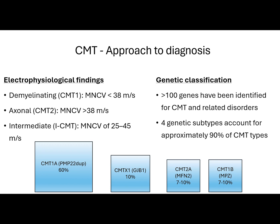The genetic classification is far more complex, as more than 100 genes have been identified for CMT and related disorders. But fortunately, only four subtypes account for the majority of CMT cases. The most frequent subtype is the autosomal dominant CMT1A, at 60% of all cases, followed by the X-linked dominant CMTX1, then by CMT2A and CMT1B.